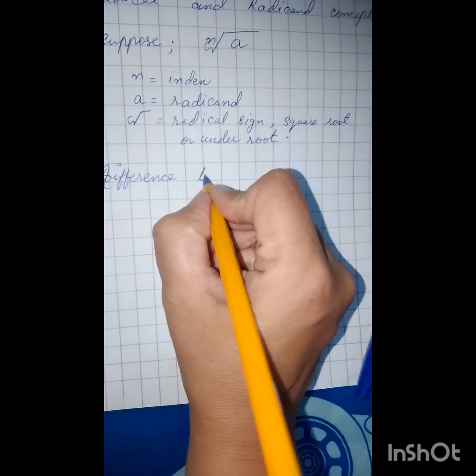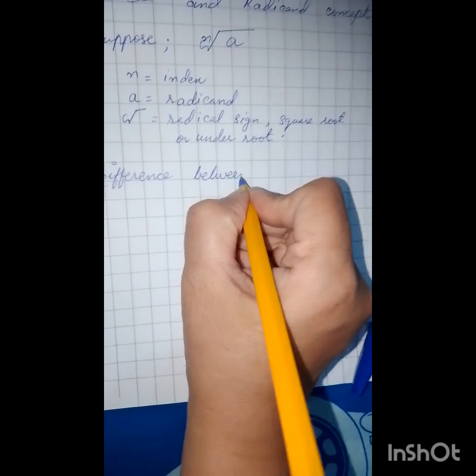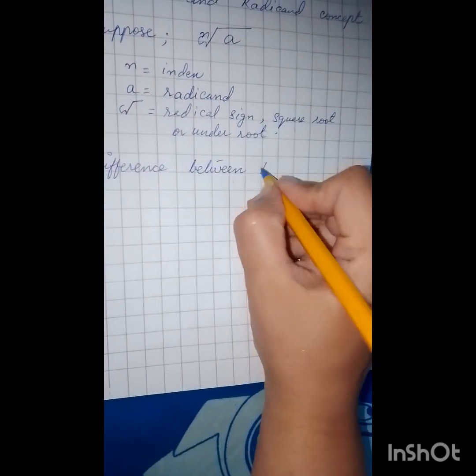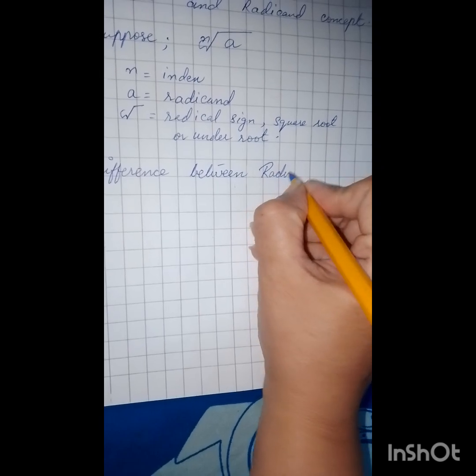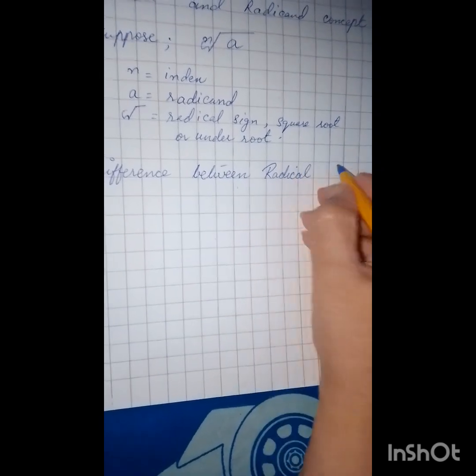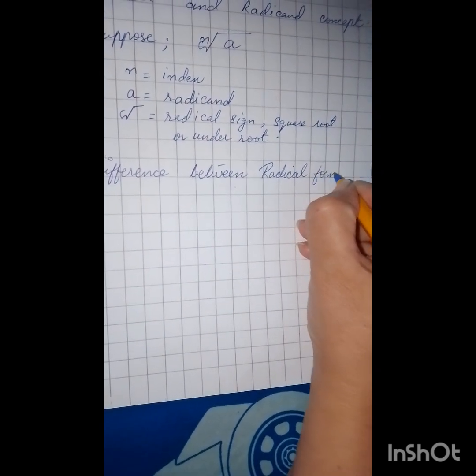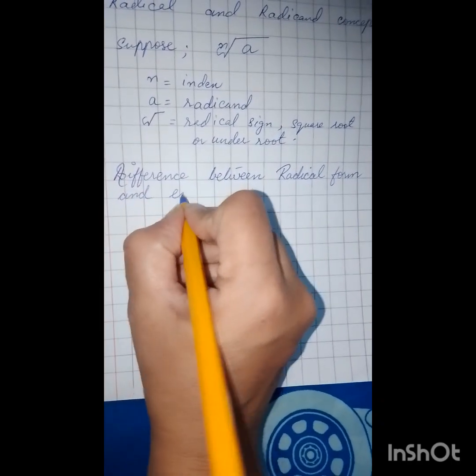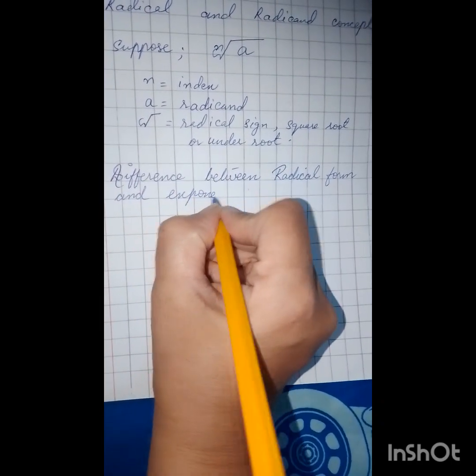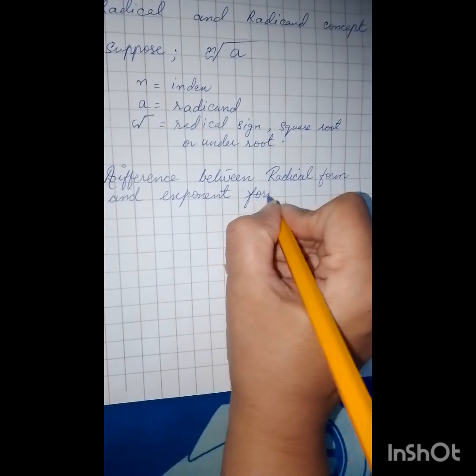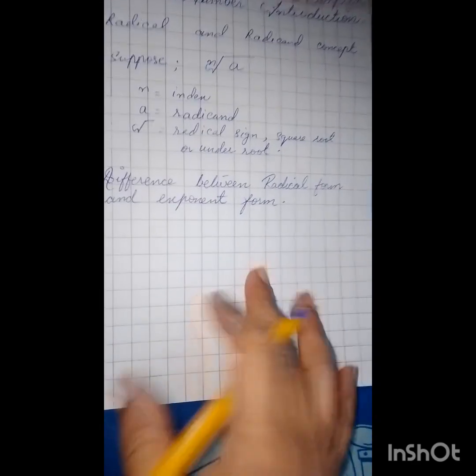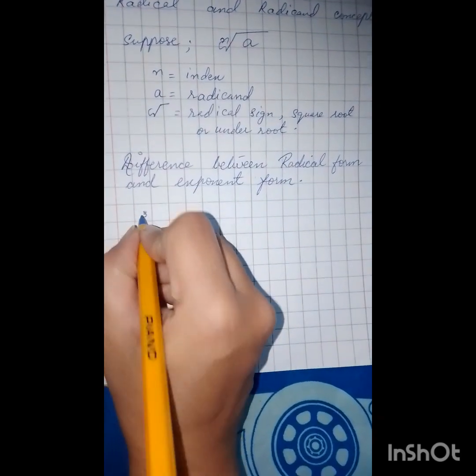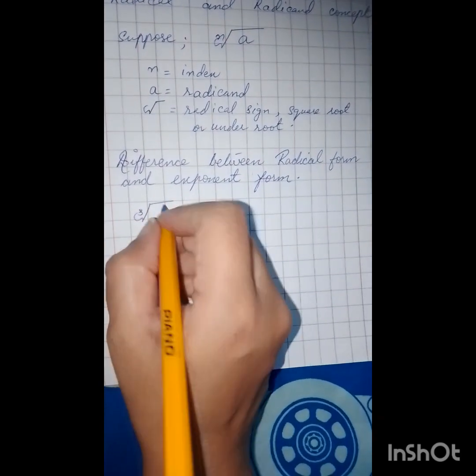Now we should discuss the differences between the radical form and the exponent form. Moreover I am going to discuss the properties of radicals and prove it for you so that step by step you will understand the whole thing and no confusion will be left.